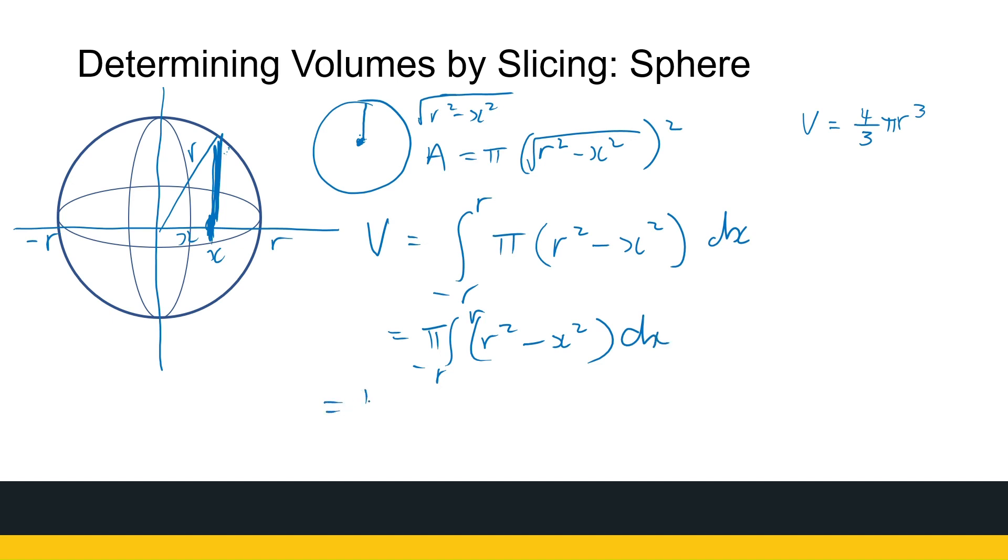So the antiderivative, then I've got pi times R squared X minus a third X cubed, everything between R and minus R. And now we're simply substituting.